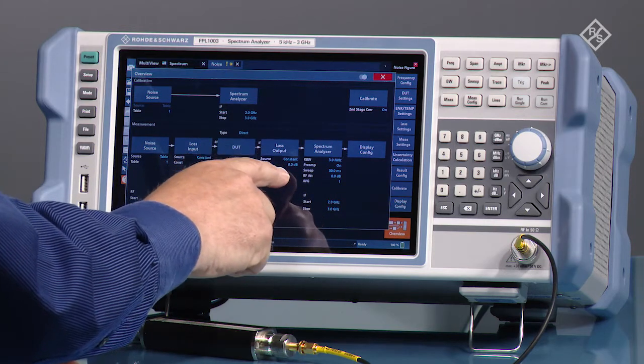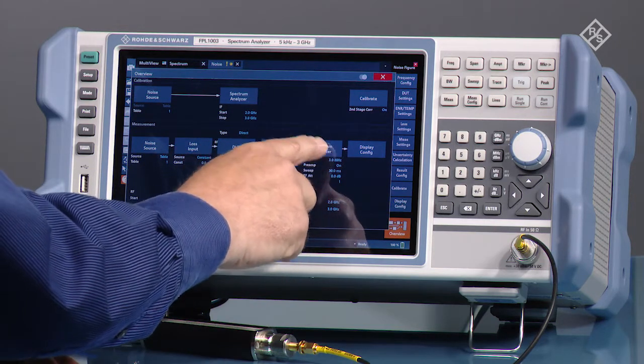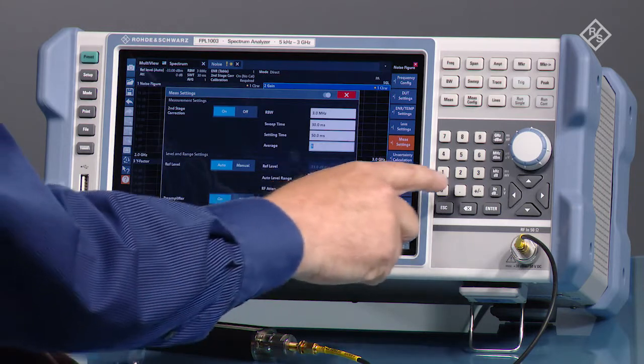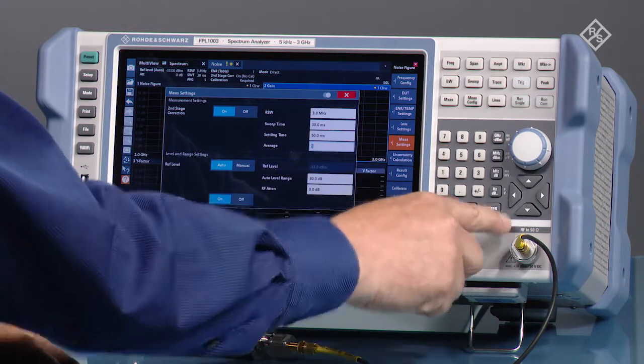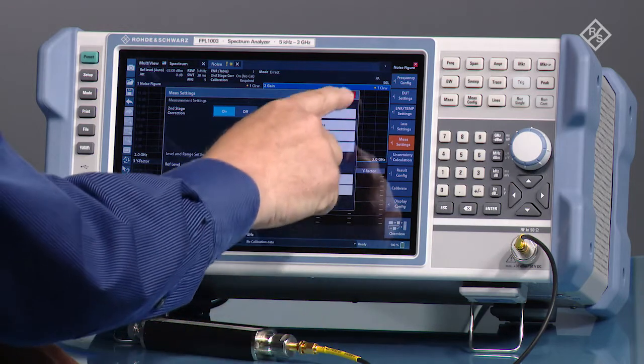For loss output we don't need to put anything in there. We're going to go under spectrum analyzer and change the number of averages to 5, and we're going to leave everything else the same.